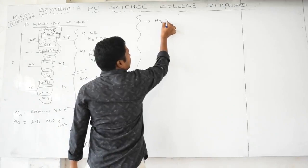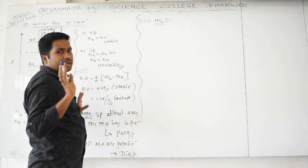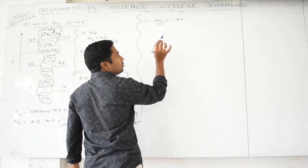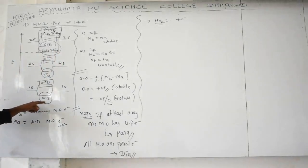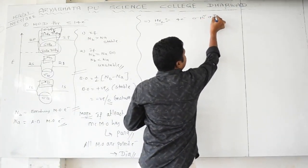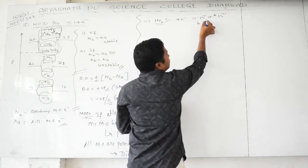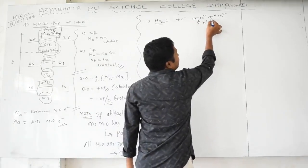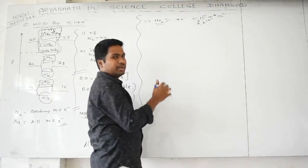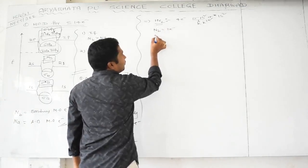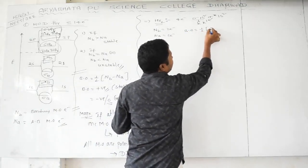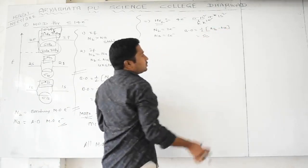Example: He₂ molecule. Each helium has 2 electrons, so total 4 electrons. Since 4 < 14, fill: σ1s², σ*1s². Electronic configuration: (σ1s²)(σ*1s²), shown as KK'. Bonding electrons = 2, anti-bonding electrons = 2 — both equal, so unstable. Bond order = ½(2−2) = 0. Bond order zero means no bond between helium atoms, so He₂ does not exist.